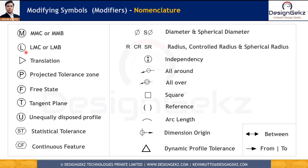The modifiers include: M (maximum material condition), L (least material condition), translation modifier, projected tolerance zone, free state, tangent plane, unequally disposed tolerance zone, statistical tolerance, continuous features, diameter, spherical diameter, radius, control radius, spherical radius, independency modifier, all around or all over modifier, square, reference, arc length, dimension origin symbol, dynamic profile tolerance (specifically used in profile controls), and between / from-and-to modifiers. These modifiers provide unique meaning to the feature control frame, tolerance, and size where they are applied.